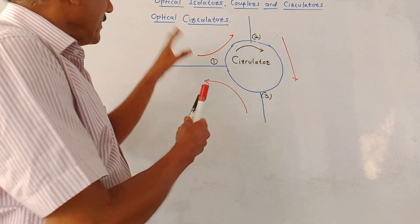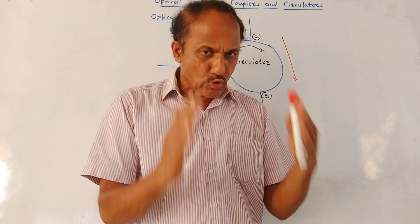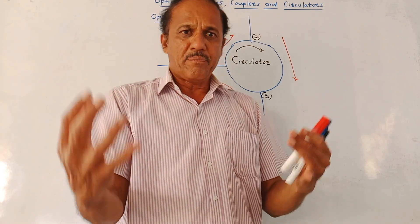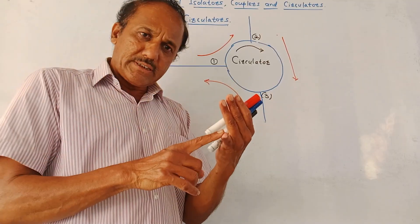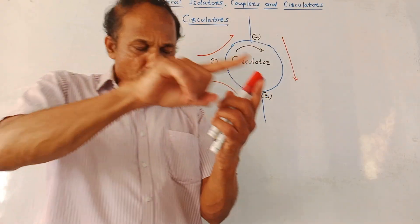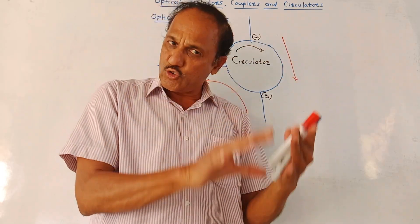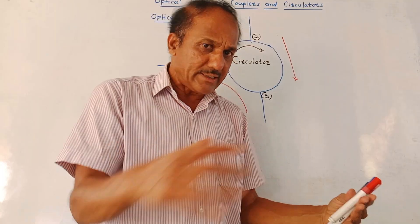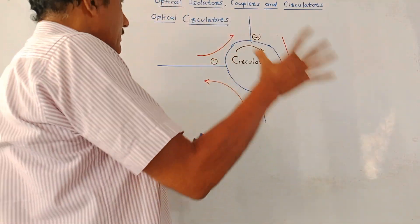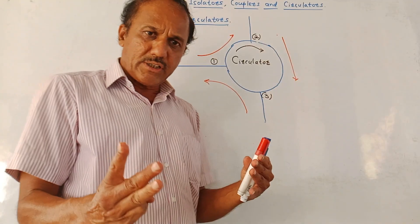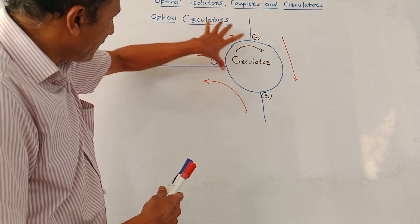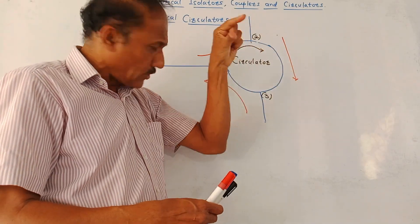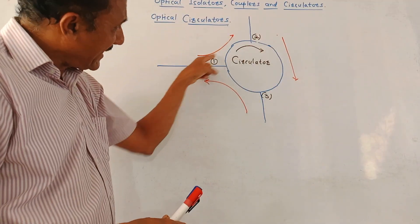The next device is the optical circulator. We have studied optical isolators, whose function is to provide isolation between source and detector. Circulators are similar to isolators — they are used to circulate optical power from one port to another port, and indirectly provide isolation. The major difference is that optical circulators have multiple ports. Commonly used optical circulators can be 3-port or 4-port. In this diagram, a 3-port optical circulator is shown. As shown by the red arrows, optical circulators allow optical power to flow in the given direction only.